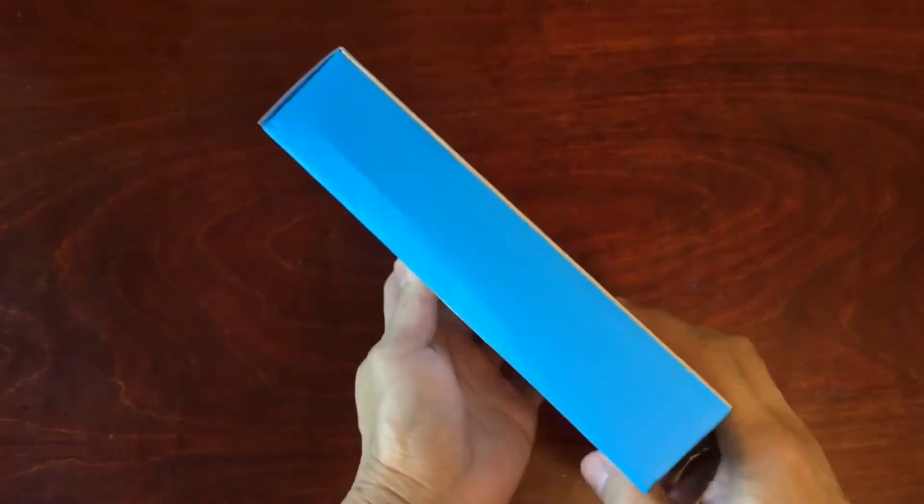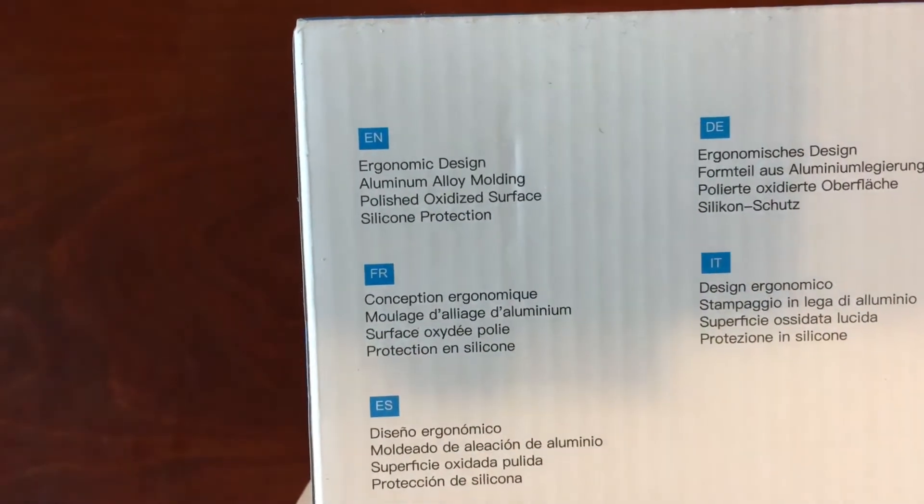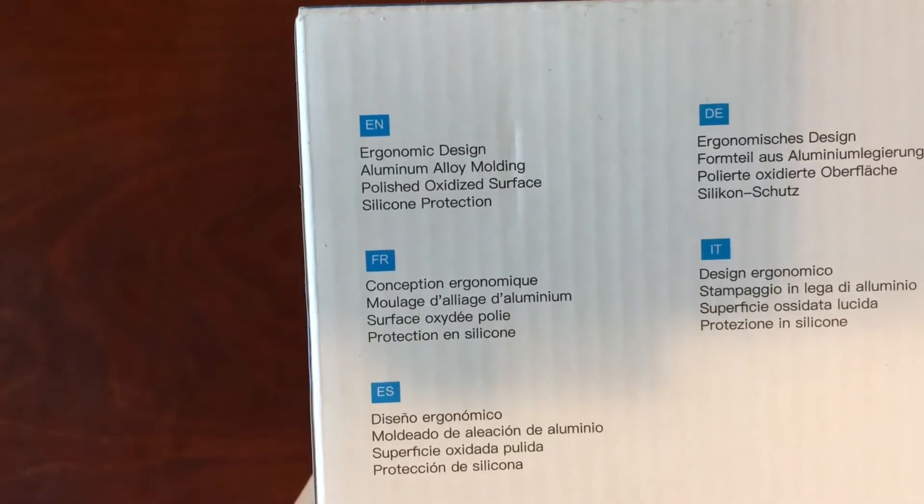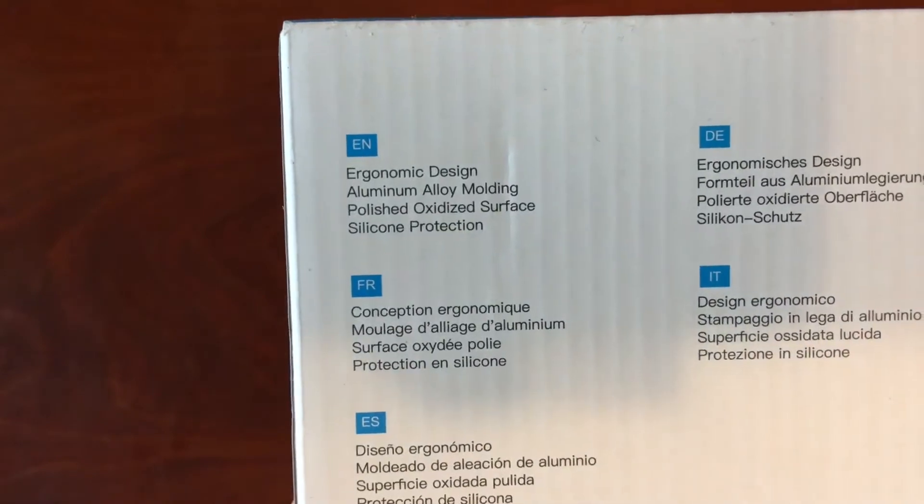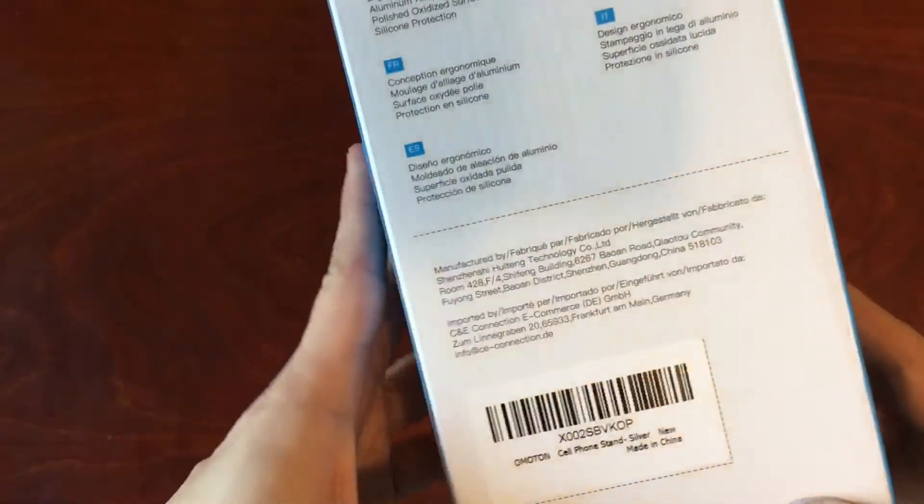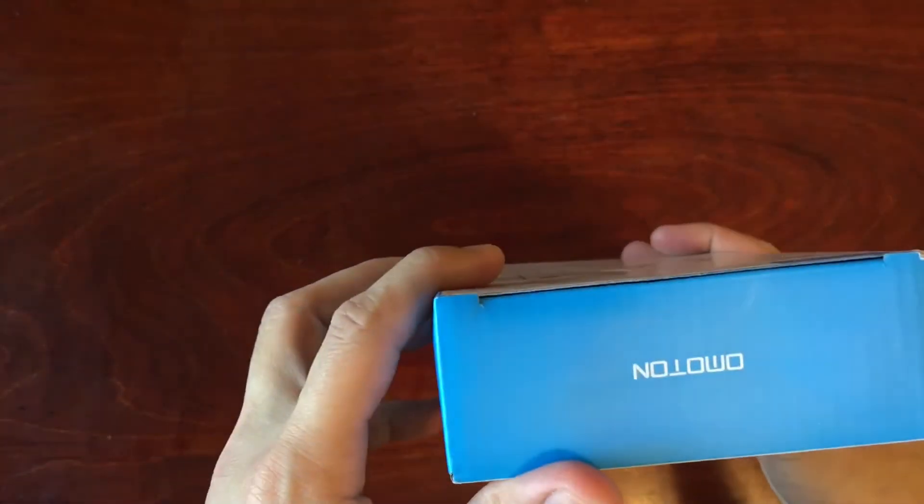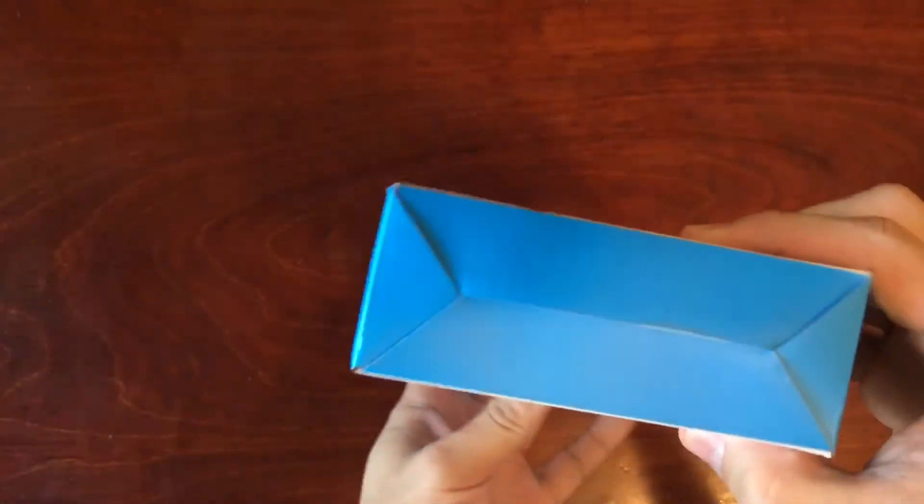There's nothing on the side and on the back in several different languages. It talks about ergonomic design, aluminum alloy molding, polished oxidized surface, silicone protection, and then just some other random information. Nothing on the side and the name of the company on the top here and nothing on the bottom.